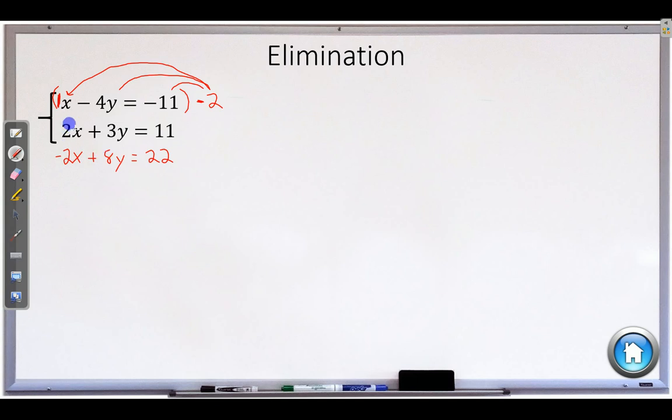So now I've got these two equations here. And you can see, when I combine these, something will eliminate. 2x and negative 2x eliminates to 0.